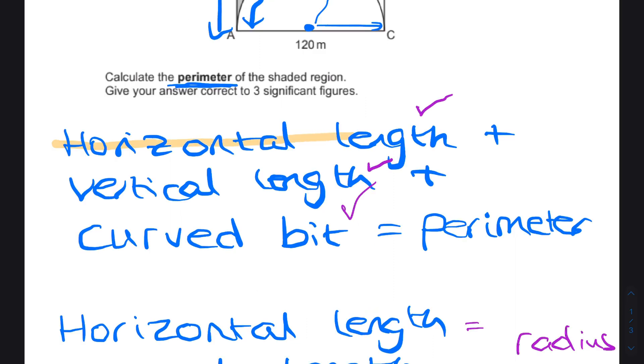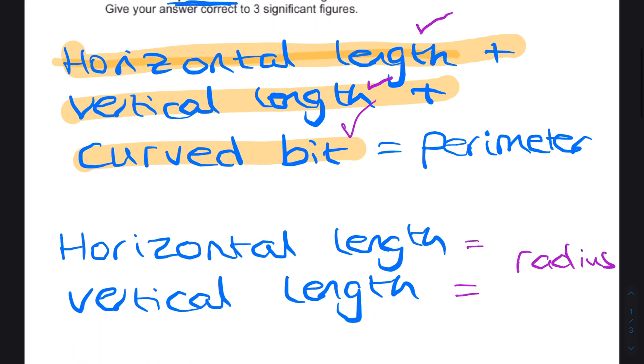In your cheat sheet you might write the total perimeter equals the individual lengths on the outside of the shape added up. And to work these individual shapes out we also need to add to our cheat sheet some knowledge of circles.